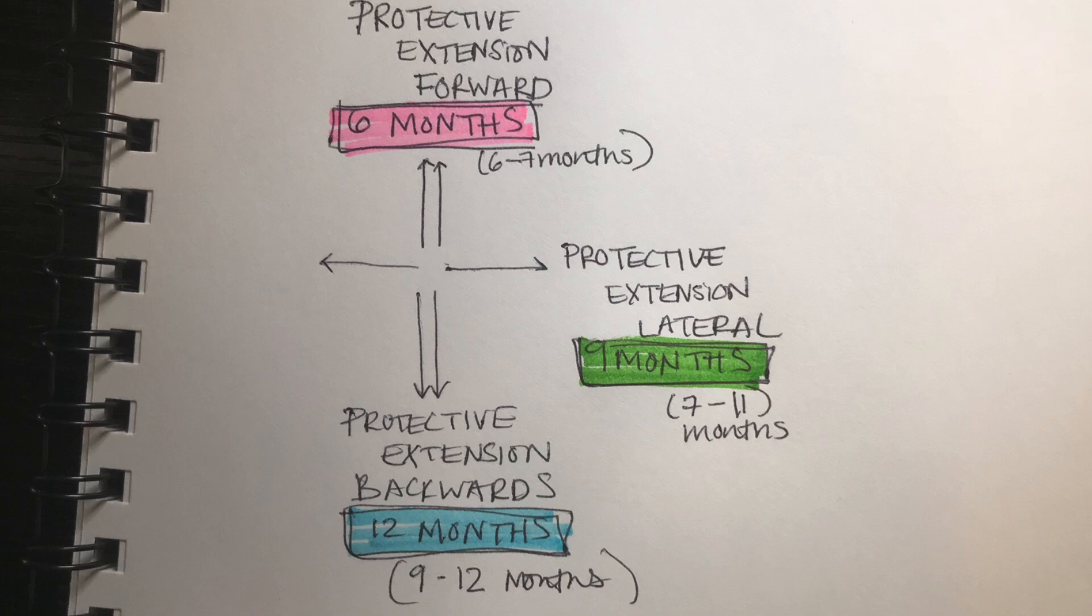And so 6 months or 6 hours is your protective extension forward. Your 9 months or 9 hours is your protective extension lateral.